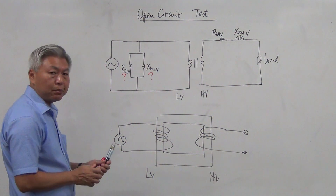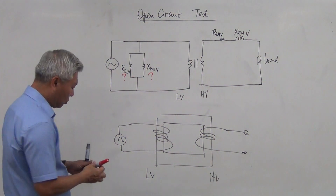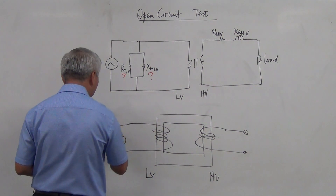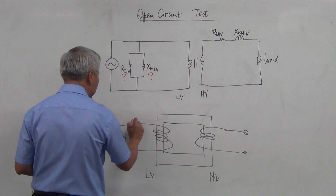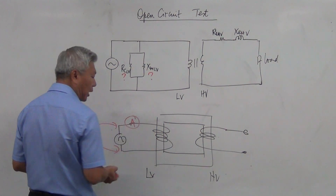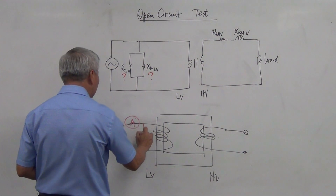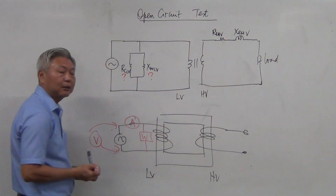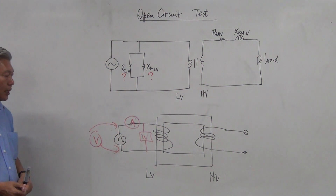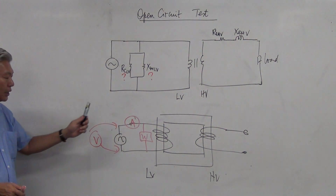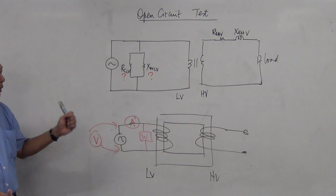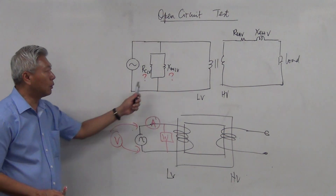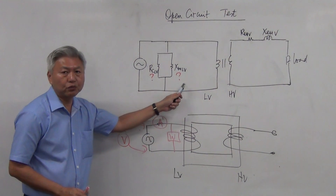We use three meters: a voltmeter to measure the voltage, an ammeter to measure the current, and a wattmeter to measure the power consumed. Using these three readings, you are able to calculate these two values — RC and XM.